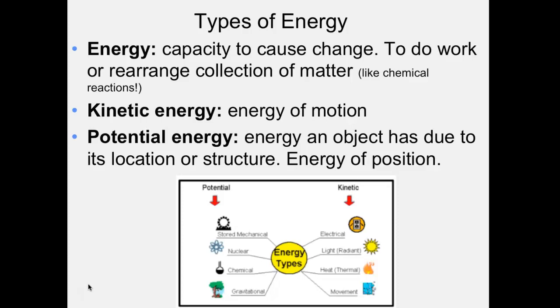Energy is defined in the first part of the outline as the capacity to do work — to cause some kind of change or rearrange a collection of matter. If you think about chemical reactions, you're rearranging atoms, and that's the work you need to do. When you create a chemical bond or break one, that's rearranging a collection of matter, and you're going to need energy for that.